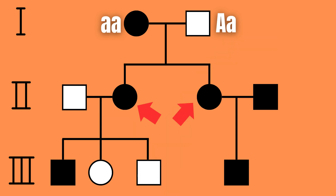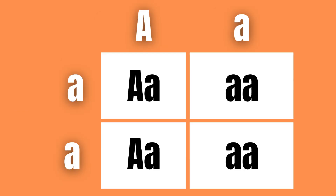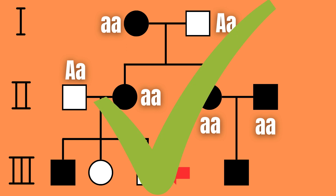What would then happen in the next generation where both children are recessive? Well, for the child on the left, an identical situation would occur as with the parents, and the partner would have to be heterozygous dominant for the results to work out.